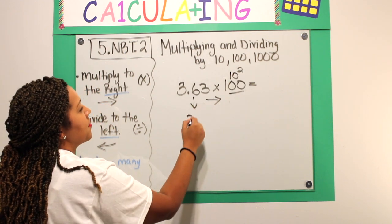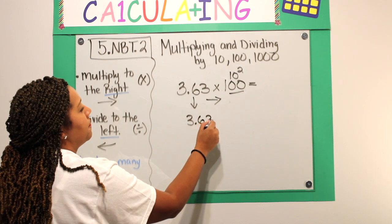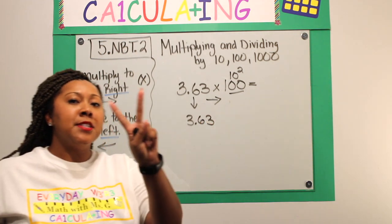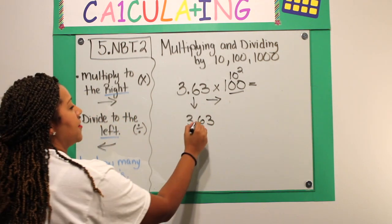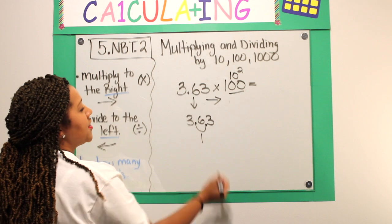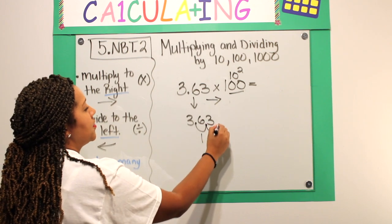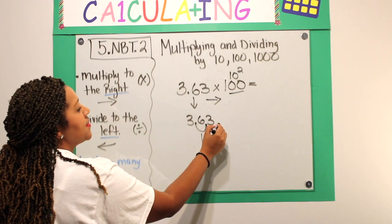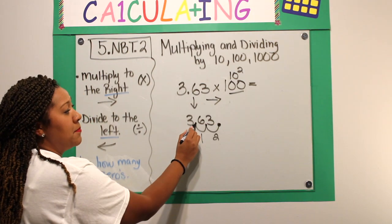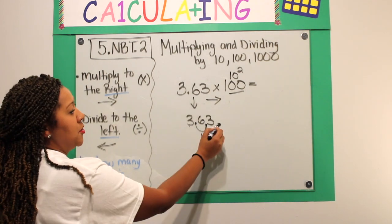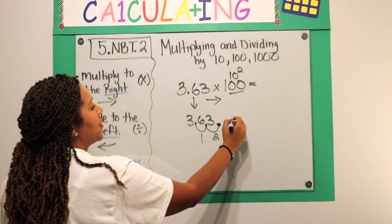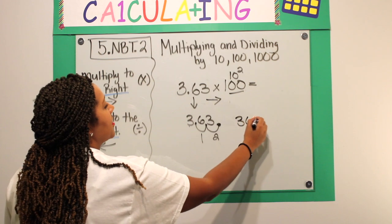I'm going to bring my 3.63 down, and I want to move my decimal two places to the right. That's one space, two spaces. My decimal moves from in between the ones in the tenths place to right here. So, my new answer is 363.